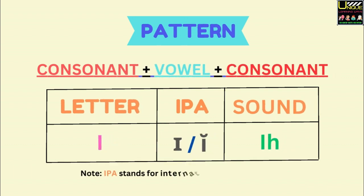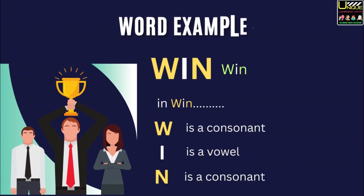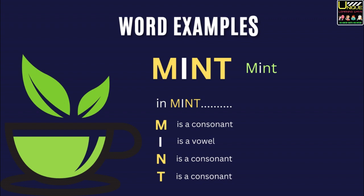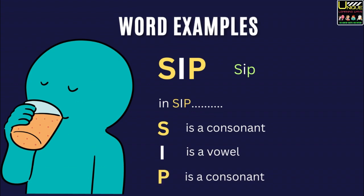Pattern: Consonant, Vowel, Consonant. Letter I, sound /ɪ/. Word examples. Hit. In hit, H is a consonant, I is a vowel, T is also a consonant. Win. In win, W is a consonant, I is a vowel, N is also a consonant. Mint. In mint, M is a consonant, I is a vowel, N is a consonant, T is also a consonant. Sip. In sip, S is a consonant, I is a vowel, P is also a consonant.